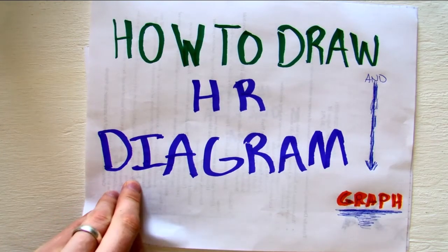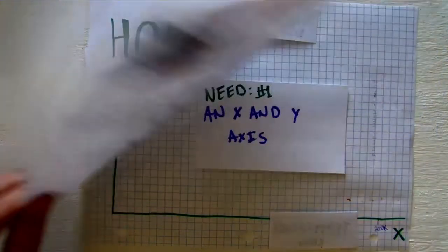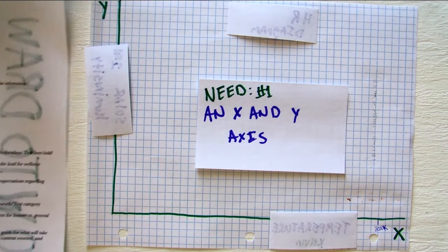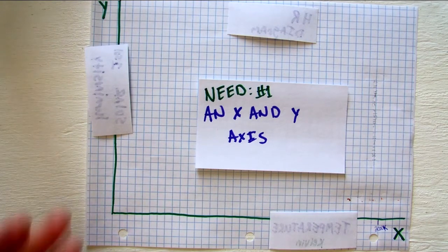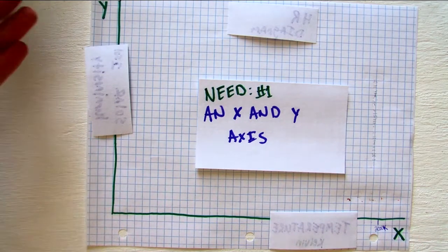HR Diagram. First, on your graph, you're going to need an X and a Y axis. So I have them here, X and Y.